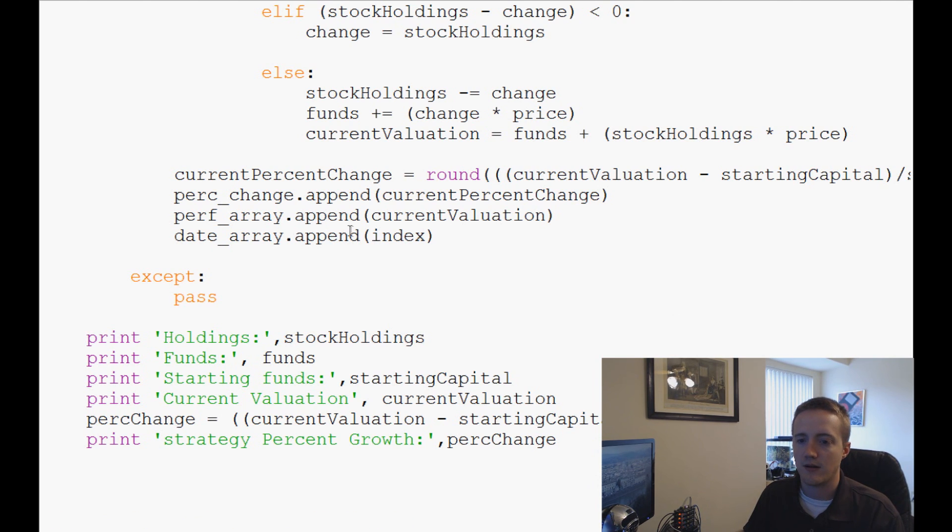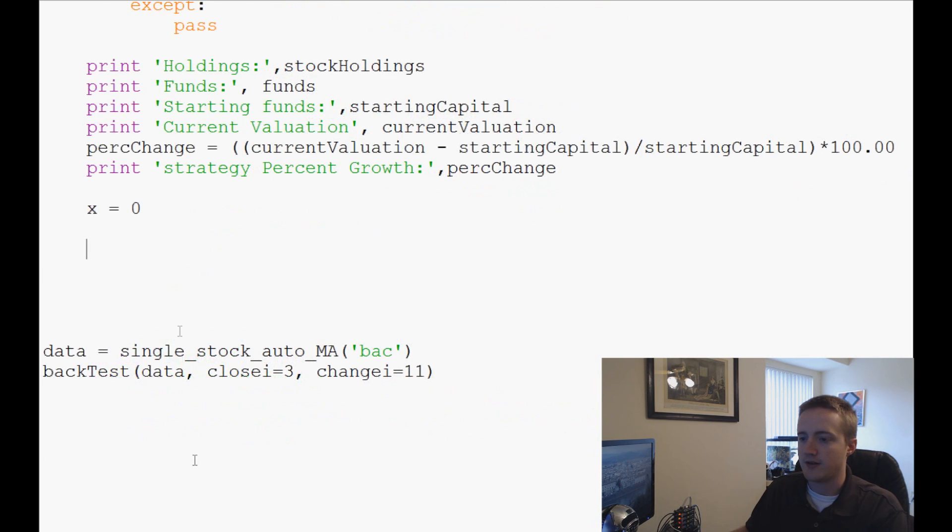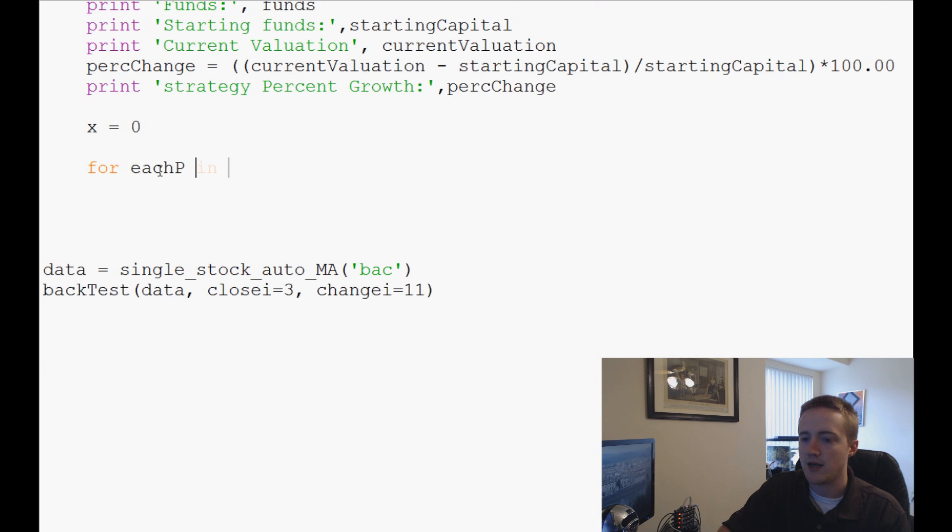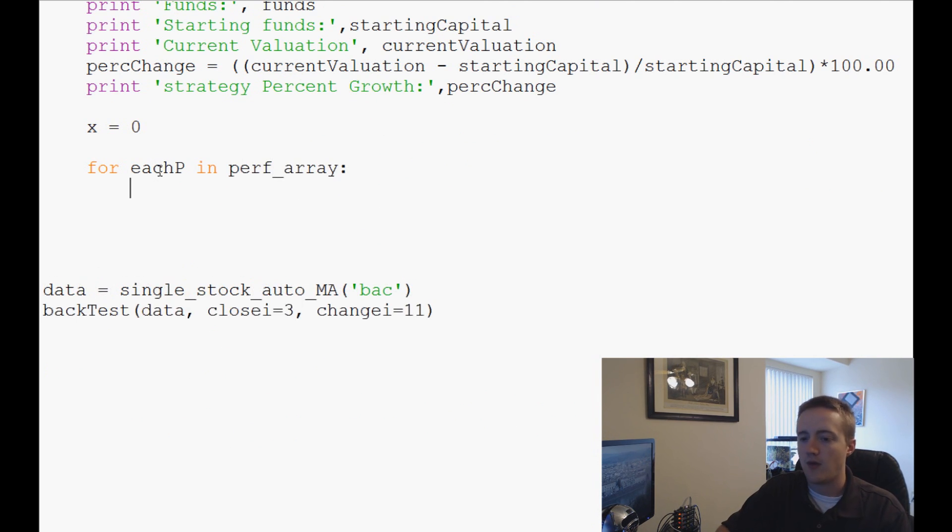So next what we're going to say, I guess we'll just loop through this. We're going to say X equals zero and then we're going to say for each P in perf_array. And we're just going to use this to iterate through this entire data set and we're going to say save data equals open and we're going to call this performance_data_sp500ish.csv. We're going to open this with the intention to append.